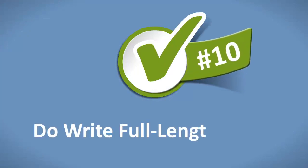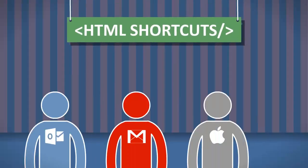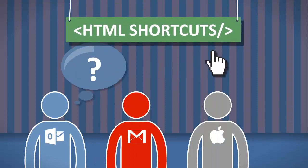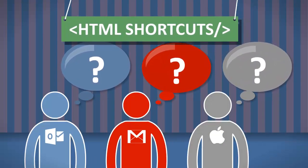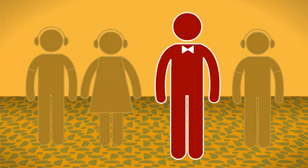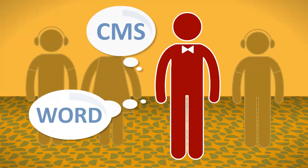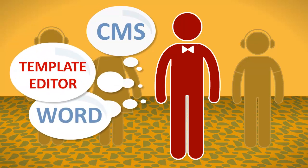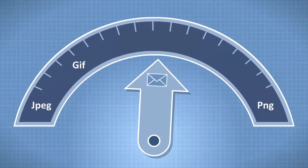Number ten: do write full-length HTML. For the same reason, write out the HTML longhand — a lot of email platforms won't recognize the shortcuts you're used to. For non-developers, that means you shouldn't try to use a direct marketing email CMS or Word to build your template. Use a tool that was made just for email signatures.